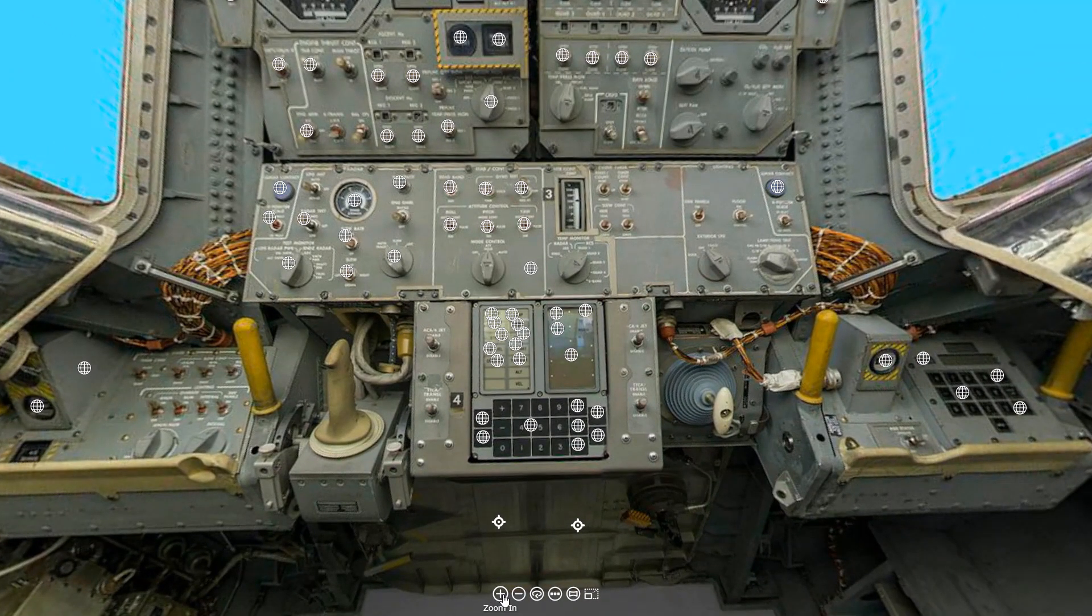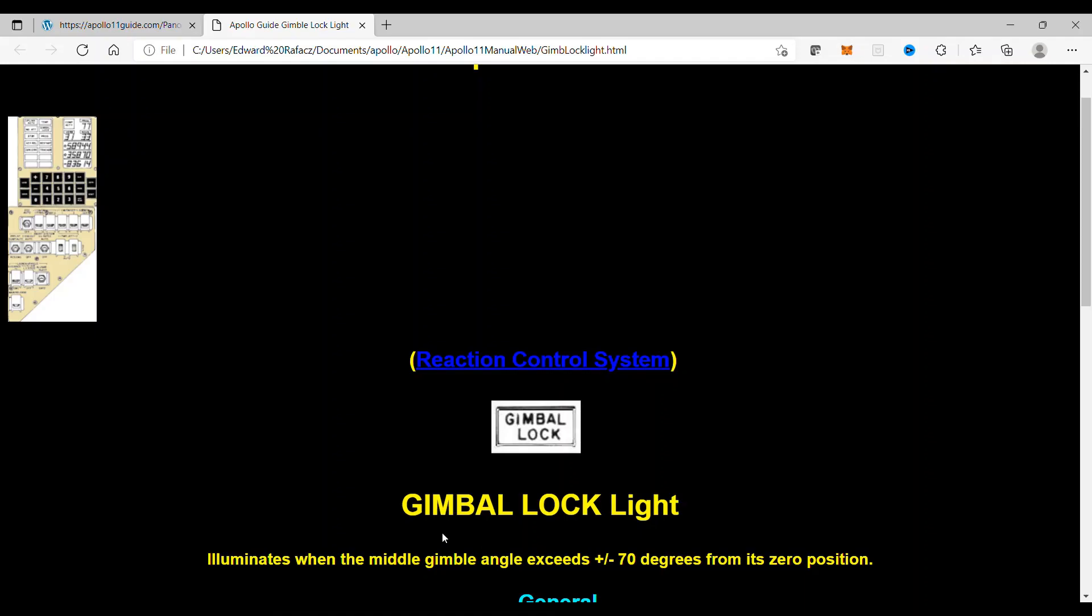One last correction I have to make on last week's episode on gimbal lock. I said it took all three gimbals to align to get gimbal lock. As you can see, gimbal lock is when the middle gimbal angle exceeds plus or minus 70 degrees from its zero position. If it reached 90 degrees, then it would align with the inner or outer gimbal. Therefore, only two gimbals would need to almost align to cause gimbal lock. Thanks, Apollo Flight Journal, for pointing this out.